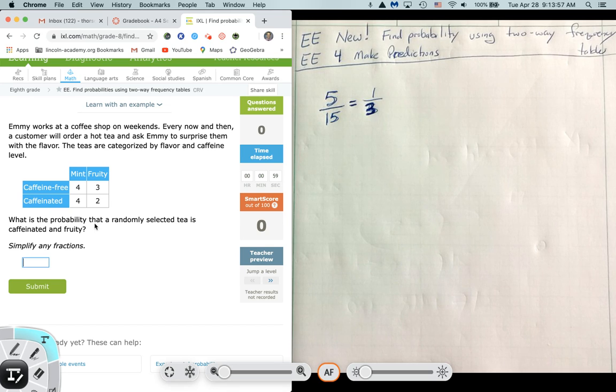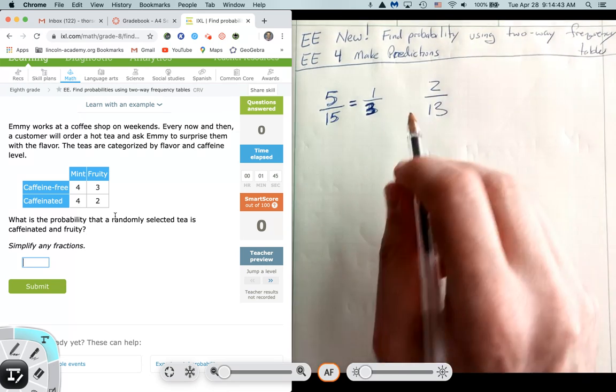So then the question says, what is the probability that a randomly selected tea is caffeinated and fruity? What we're going to do is we're going to find the cross where the row and the column intersect. In other words, we want caffeinated, which is the caffeinated row, and we want fruity, which is the fruity column. The caffeinated row and the fruity column, there's two that got a caffeinated fruity drink. But now the question is, what's the probability that that happened? Well, we've got to take that two out of the total. So we add those four numbers up. We add the four to the four, that's eight. Plus three more is 11. Plus two is 13. So we get 2 out of 13 is our probability.